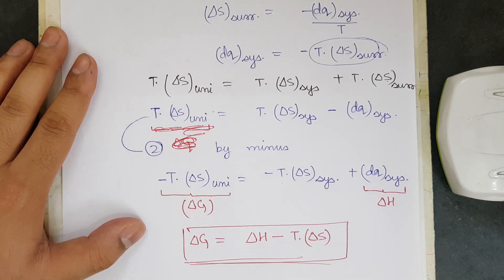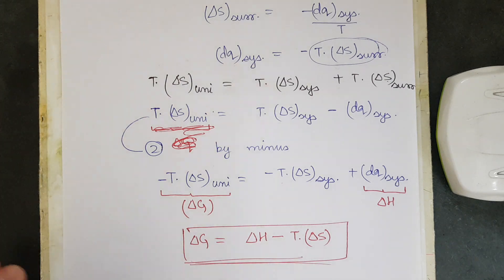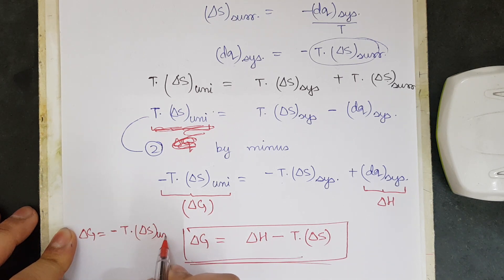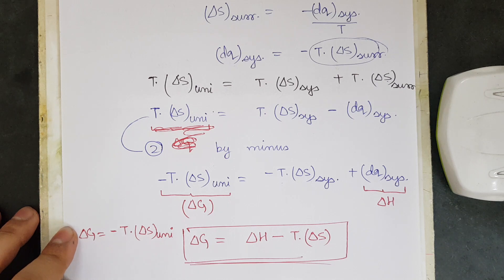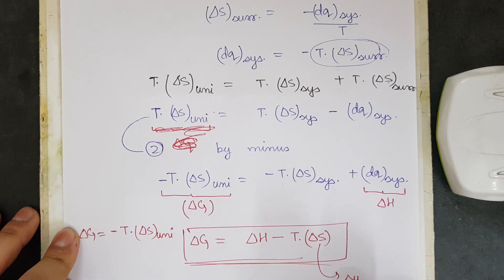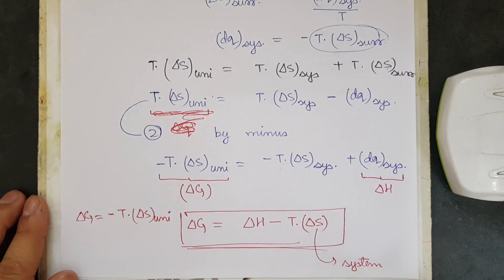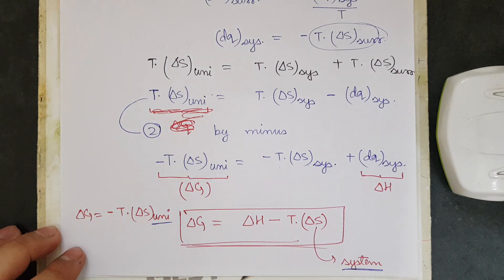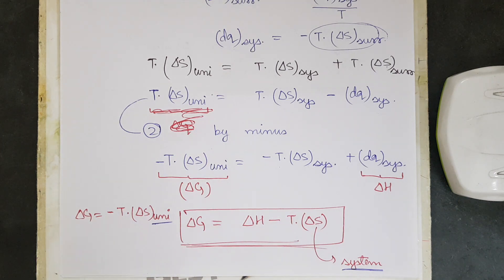To summarize: delta G is defined as minus T times delta S for the universe — not the system or surroundings, but the universe. Delta H and delta S in the formula both refer to the system. Understanding the derivation is important because a question on this topic appeared in JEE Advanced 2013. If you have any doubts, please ask in the comment section. Thank you.